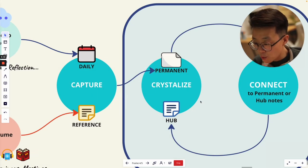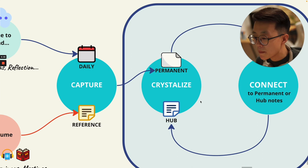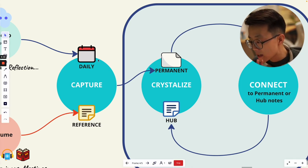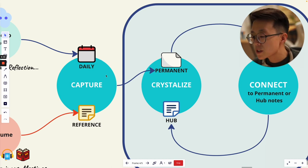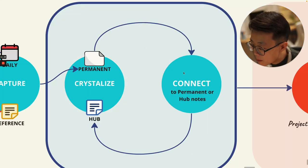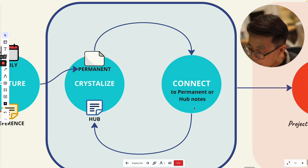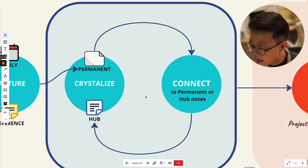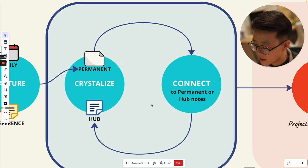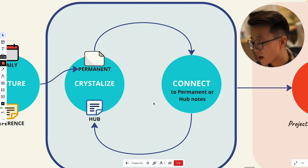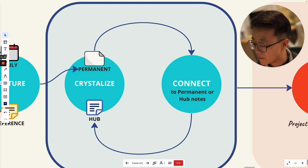The second C is crystallize. You capture raw material and then crystallize it into something you can use later. Once you capture everything into daily notes and reference notes, you crystallize into permanent notes. Once you have permanent notes, you connect them to other permanent notes or hub notes. While doing this, you might crystallize further into hub notes or permanent notes. This process cycles until you reach the point where you want to summarize everything into hub notes.